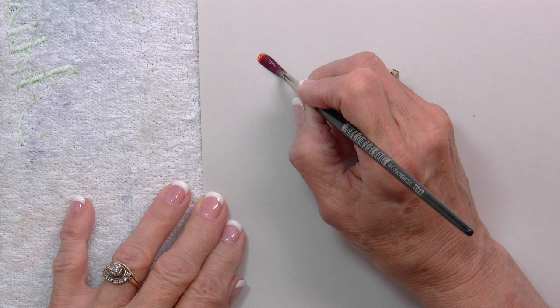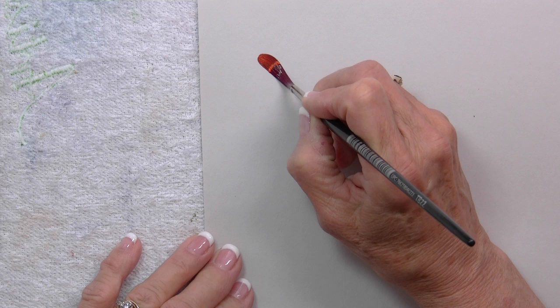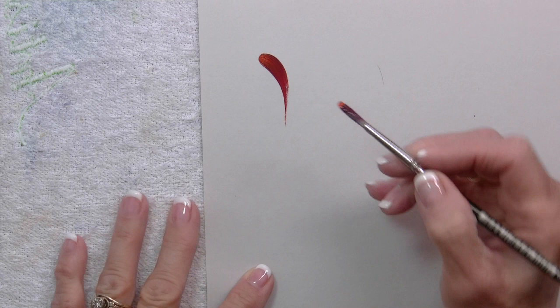That allows the paint to spread through, so that when you begin to pull, you will be able to see the two colors. You can see a little bit of the orange.